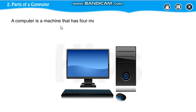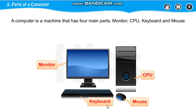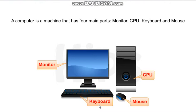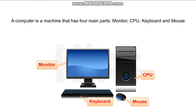A computer is a machine that has 4 main parts. The first main part is your monitor. The second main part is your CPU — Central Processing Unit — which is the brain of a computer. Then your keyboard. How many keys are there in your keyboard? 104 keys are there in your keyboard. Then your mouse. So these are the 4 main parts of a computer.